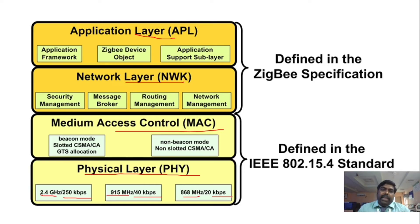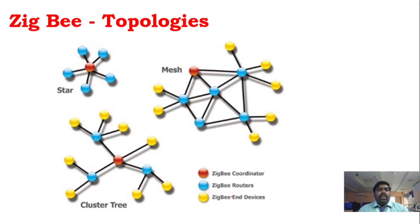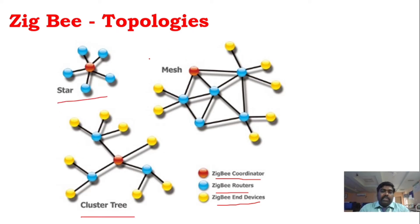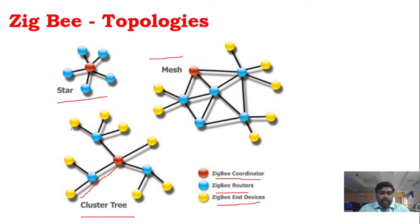Zigbee supports three different topologies. In the star topology, you connect with Zigbee routers. In the cluster tree topology, there is a hierarchy: end device, then router, then Zigbee coordinator. The cluster head acts as a router, which then connects to the Zigbee coordinator.